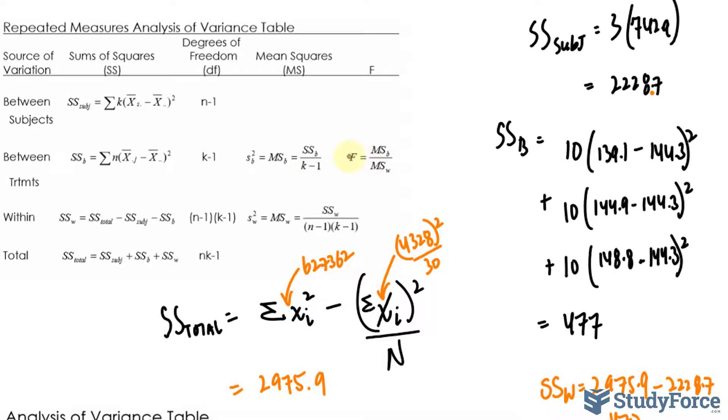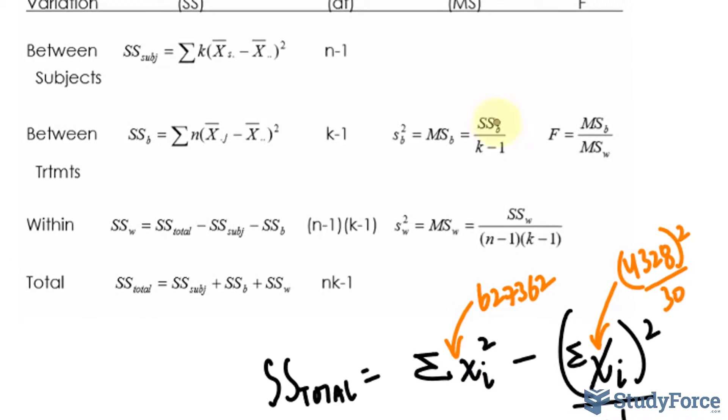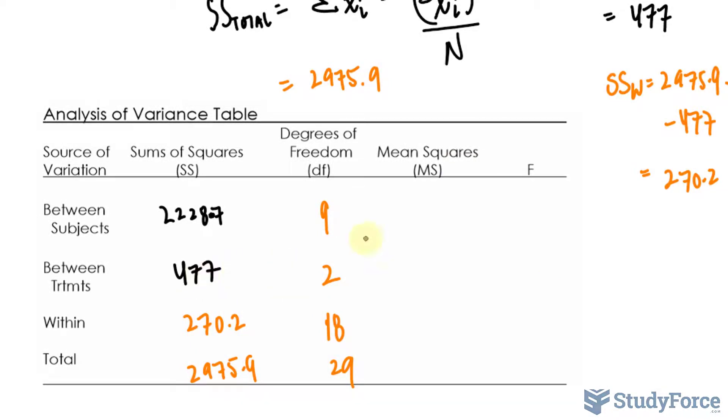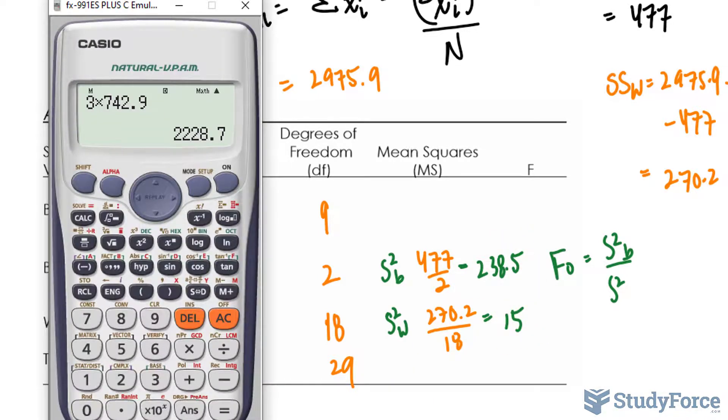The last few things we need to find are these values. And then, finally, using those values to give us F observed. So we'll take SSB divided by the degrees of freedom. SSB is this number, 477 divided by 2. And then that number, 270.2 divided by 18. Remember, this part represents S squared B. And that part represents S squared W, which we'll use for F observed. This results to 238.5. And dividing these, you should end up with 15. So we take 238.5 divided by 15. And we get an F observed of 15.9.